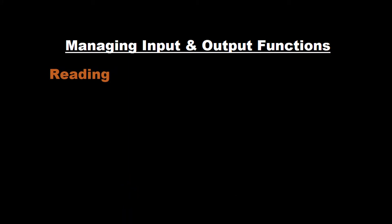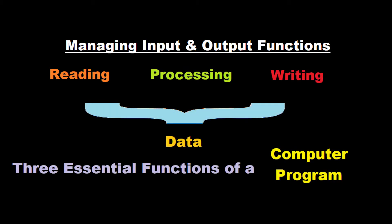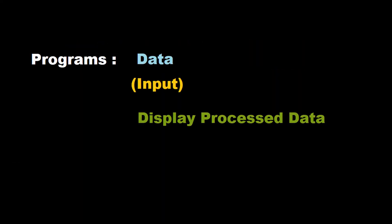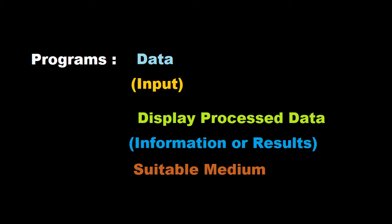So let's start. Reading, processing, and writing of data are the three essential functions of a computer program. Most programs take some data as input and display the processed data — often known as information or results — on a suitable medium.